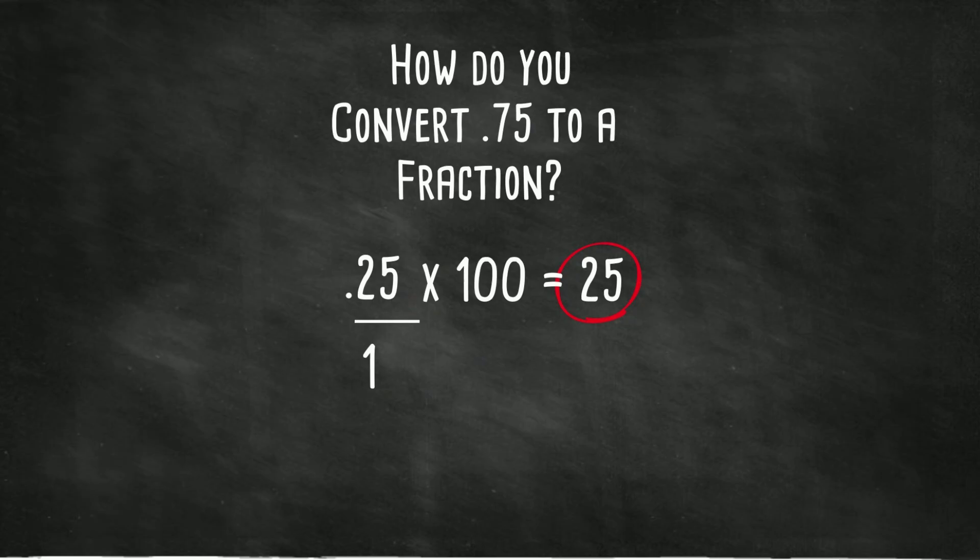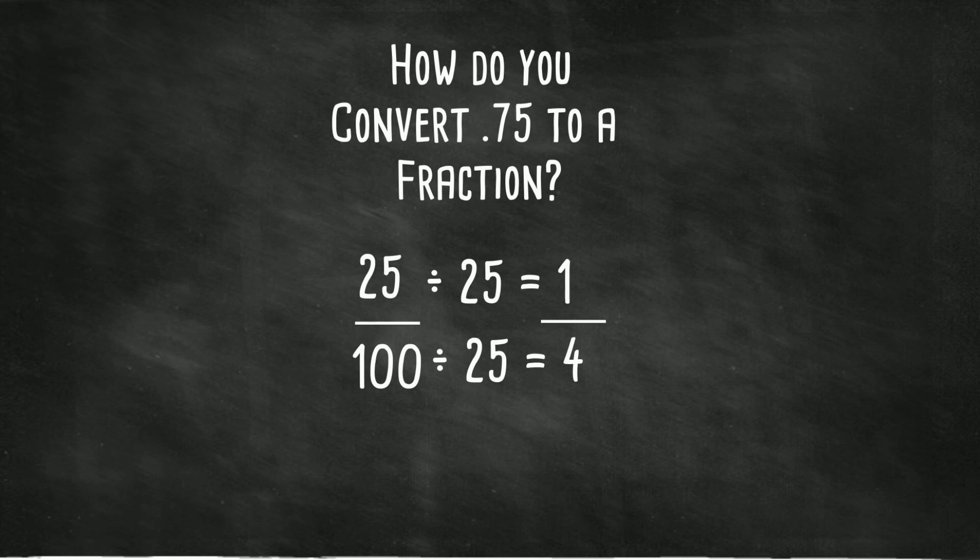What you do to the numerator, you need to do to the denominator. One times one hundred is one hundred. Now let's just reduce this fraction. Twenty-five goes into one hundred four times. Twenty-five goes into twenty-five one time. So you end up with one-fourth.